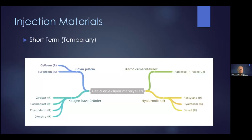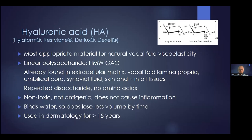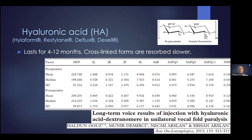For short-term use, on the market there is carboxymethyl cellulose, but it is not distributed outside the United States — we don't have it in Europe or in Turkey yet. What we usually use nowadays is hyaluronic acid. Hyaluronic acid is the most appropriate material for vocal fold viscoelastics. It is a linear polysaccharide, which means it does not contain proteins, so it is non-toxic and not antigenic — it does not cause much inflammation. It binds well to water, so it loses less volume over time, and it has been used in dermatological cases for more than 20 years.